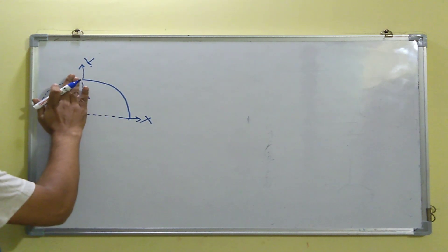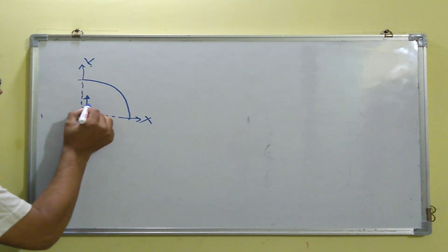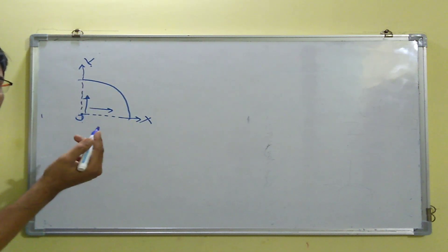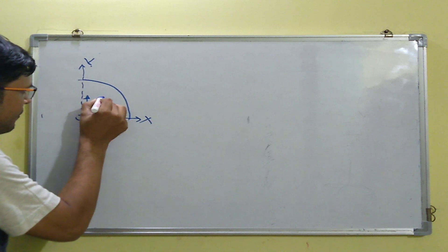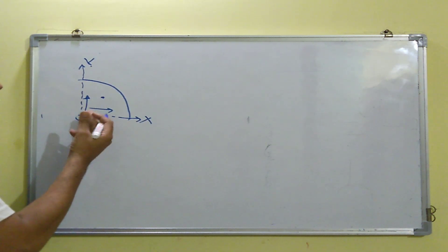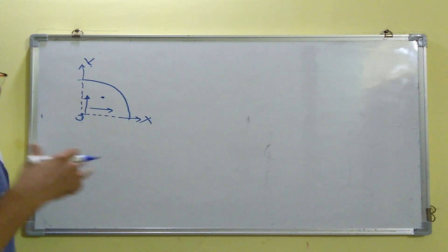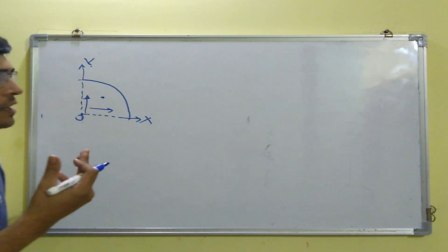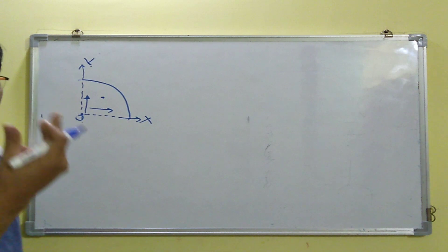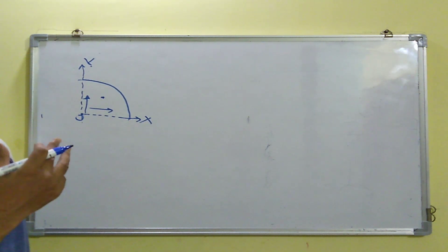If I remove this part also, we can expect the center of mass to be shifting in the x direction, so we can expect it to be lying somewhere here. Since it's a symmetrical case, whatever the location of the center of mass along the x-axis, the same location will be along the y-axis as well.